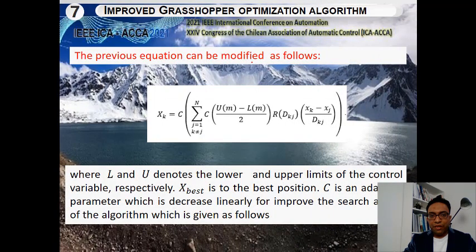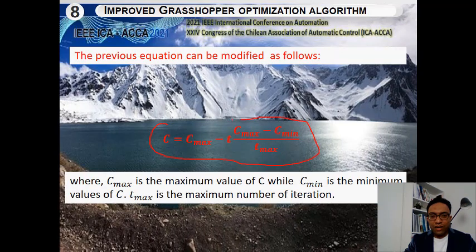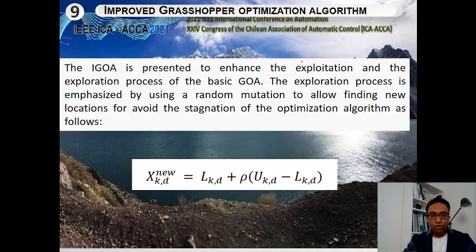The previous equation can be modified as follows, where we apply lower and upper limits of the control variable U and L. X_best is the best position. C is an adaptive parameter that decreases linearly to improve searchability of the algorithm, given as: C = C_max − t × (C_max − C_min) / T_max, where C_max is the maximum value of C, C_min is the minimum value of C, and T_max is the maximum number of iterations. This is the modification for the Grasshopper Optimization Algorithm.